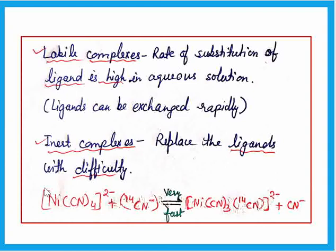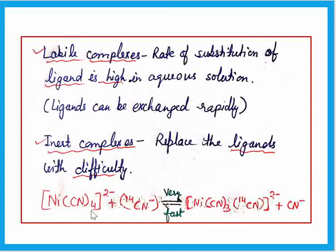For example, here is a reaction: the nickel tetracyano complex ion Ni(CN)4 2- very rapidly exchanges its CN minus ligands with C-14 labeled CN minus. These labeled ligands are easily replaced, which means Ni(CN)4 2- is a labile complex. In labile complexes the ligands are easily exchangeable, while in inert complexes the ligands are not easily exchangeable.